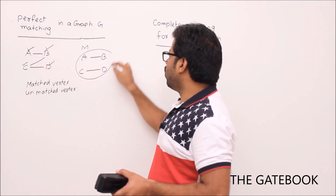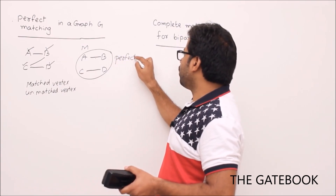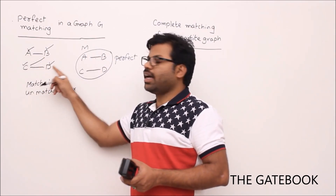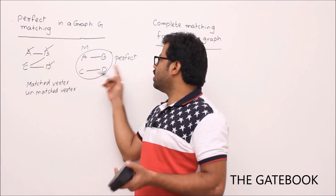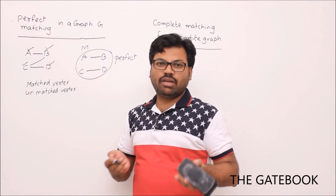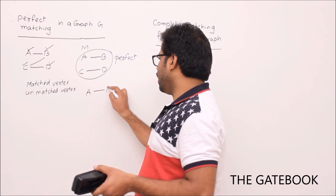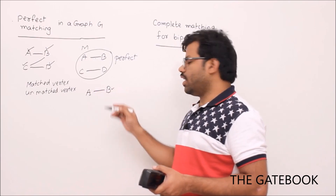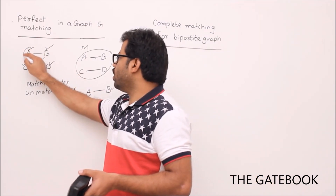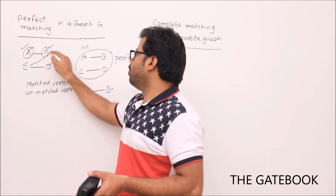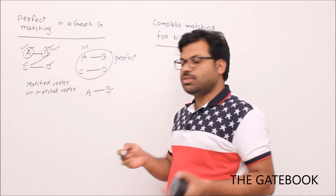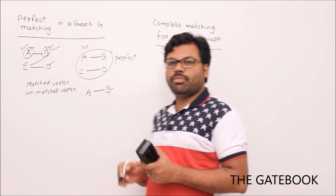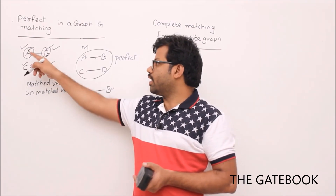When every vertex got one edge in the matching, we say that this is a perfect matching. In a perfect matching, every vertex is a matched vertex. There are some matchings that may not be perfect — for example, just the edge a-b. In that case, only a and b are matched, but not c and d. Such a matching is called a non-perfect matching. So, a perfect matching is a matching where every vertex is matched.